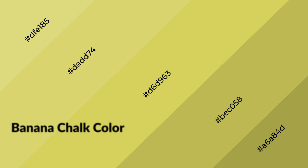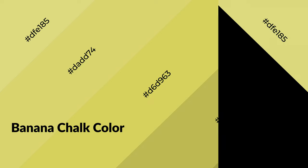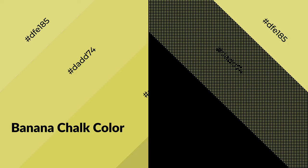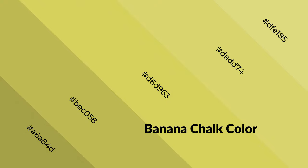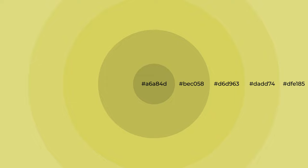Banana chalk is a warm color and it emits cozier and active emotions. Warm colors are symbols of warmth, fire, heat, and sunshine. It also evokes joy, passion, love, and even anger. You can see them used in restaurants and gyms.